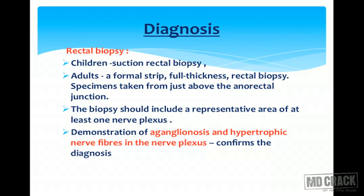For diagnosis, we should always perform rectal biopsy. In children, suction rectal biopsy is used, while in adults a formal full-thickness rectal biopsy is taken. The specimen is taken from just above the anorectal junction and should include a representative area of at least one nerve plexus. Demonstration of aganglionosis and hypertrophic nerve fibers in the nerve plexus confirms the diagnosis.